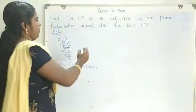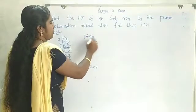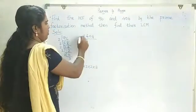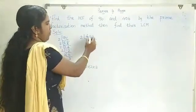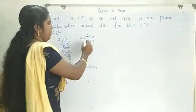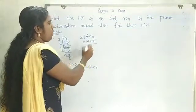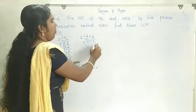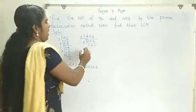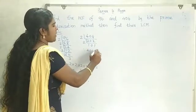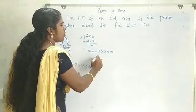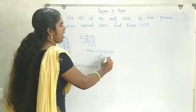Next, 404. The last digit 4 is even, so 404 is divisible by 2. 404 ÷ 2 = 202. Again 202 is divisible by 2: 202 ÷ 2 = 101. Since 101 is a prime number, we stop this process. Therefore, 404 = 2 × 2 × 101, which means 2 squared into 101.